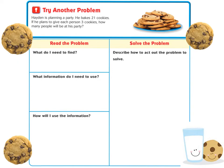Let's try another problem. Hayden is planning a party. He bakes 21 cookies. If he plans to give each person three cookies, how many people will be at his party?